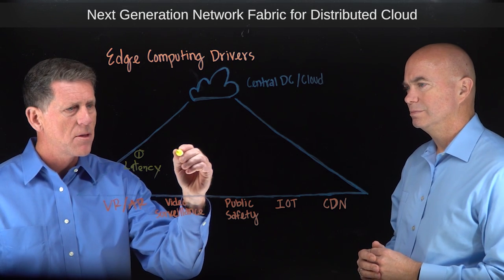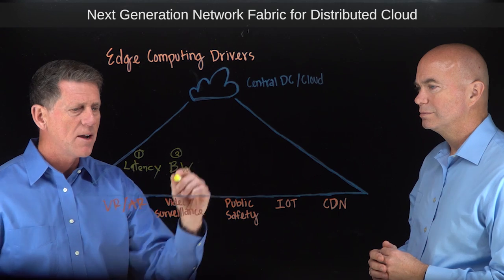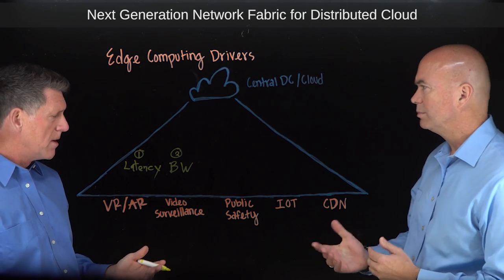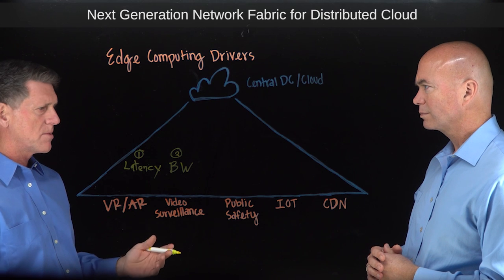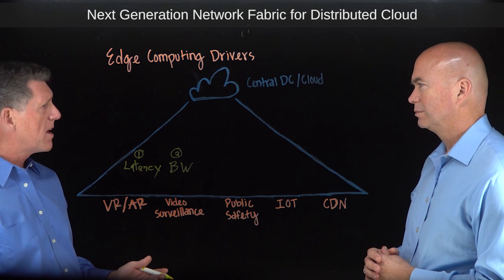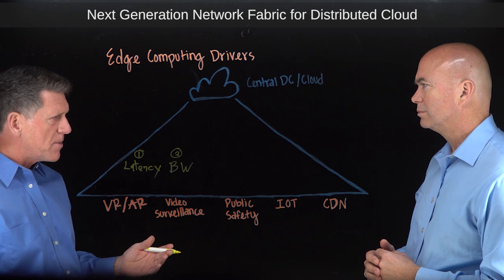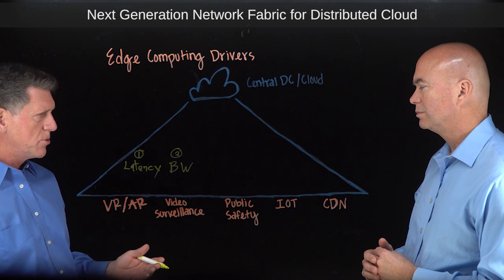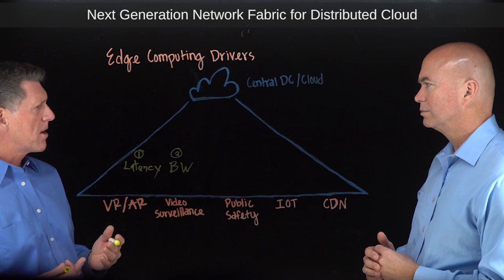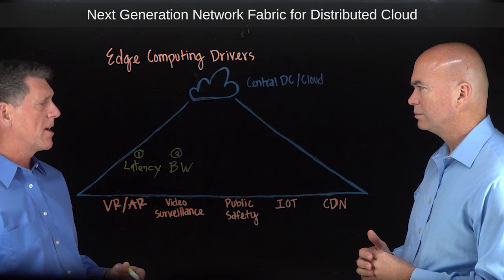The second one is bandwidth. Let's look at video surveillance as an example. Today I've got two, three, four, ten cameras. In the future, I might have a thousand. And of those thousand cameras, I might be interested in five minutes of video on two different cameras. I don't want to send all that back up to the cloud and pay for that bandwidth — I want to do the analytics at the edge. Sometimes we call that data thinning.